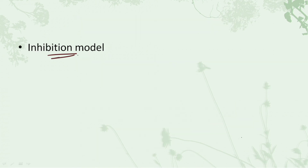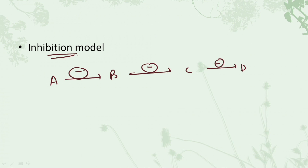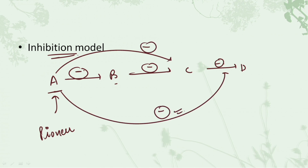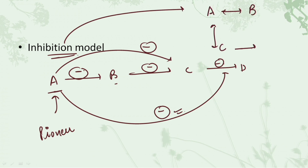The last model is the inhibition model. As the word suggests, inhibition means the first species inhibits the arrival of the second species. The second inhibits the third, the third inhibits the fourth. That means the pioneer species — the first initial species — is not helping the rest to stabilize; rather, it is inhibiting them. Species A inhibits B, A inhibits C, A inhibits D as well. All species are giving a negative impact to each other. This is also a representation for the inhibition model. Make sure you remember these representations, as exam questions have come directly from them.